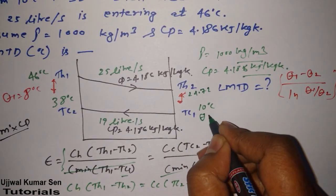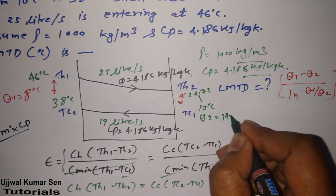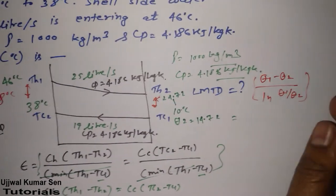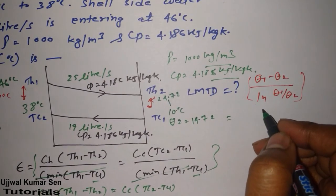That means theta 2 is equal to this one minus this one. So 14.72. Now put the values of theta 1 and theta 2, get the answer. Simple.